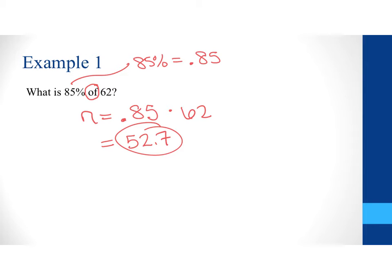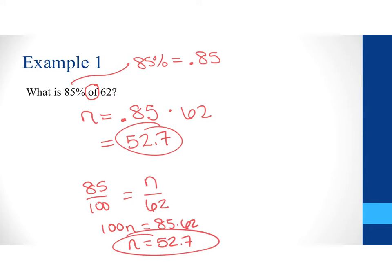Now, if you like to write this as a proportion, what you could do is write your 85% as 85 over 100. And we would say that this is equal to n divided by 62. And then when you cross-multiplied you end up with 100n equals 85 times 62. And when you divide it by 100 you still get that 52.7. So, either way you set this up, you will get the same answer.